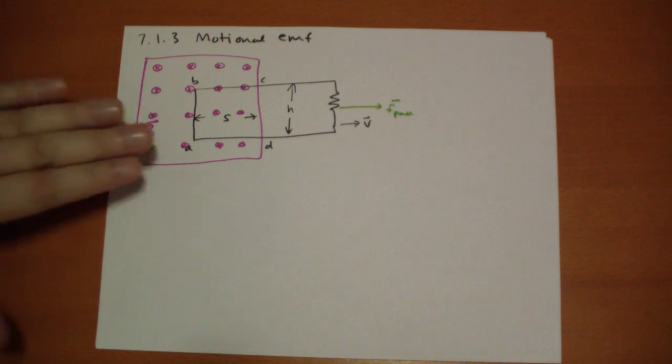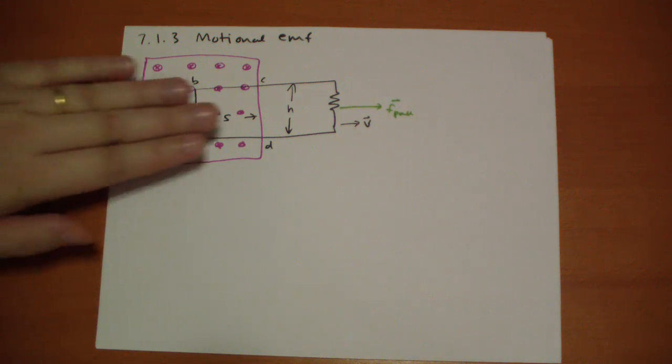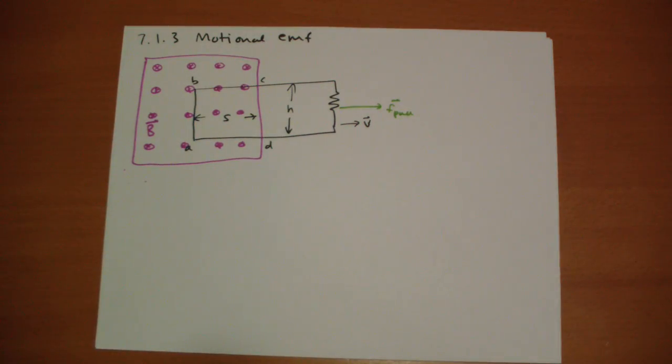This wire loop is traveling at constant velocity v, there's obviously somebody pulling on it to make it move. And the question is, what's the EMF? What is the force that's driving current to this loop? And the answer is that it's the magnetic force.